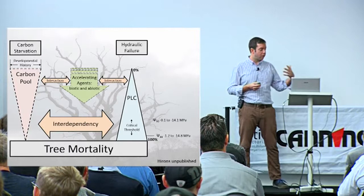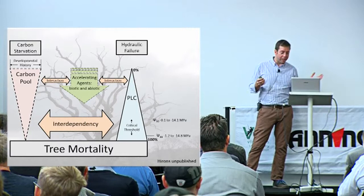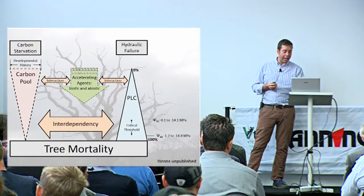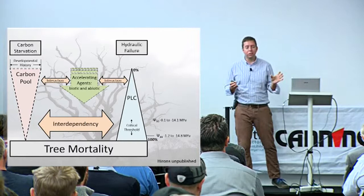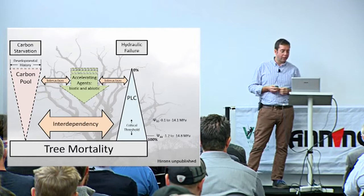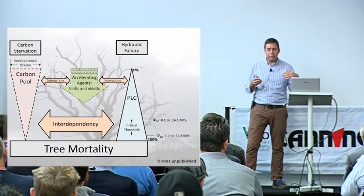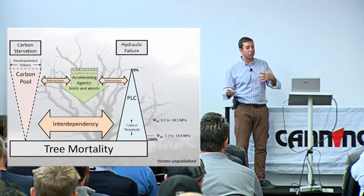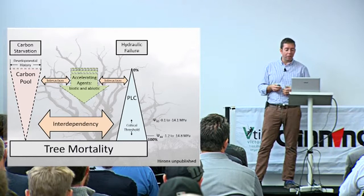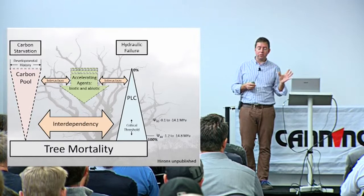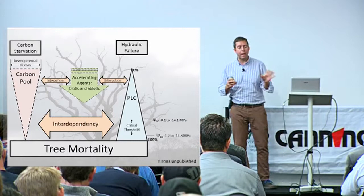Hydraulic failure can occur within a few weeks or certainly within a few months - much more rapidly than carbon starvation. PLC stands for percentage loss in conductivity. A fully conductive system has zero loss of conductivity, and once hydraulic failure occurs in its fullness, it's 100% loss. There are also accelerating agents - they can be abiotic, like drought, salt stress, or compaction, or biotic, involving insects, fungi, and bacteria. These can all accelerate those processes.